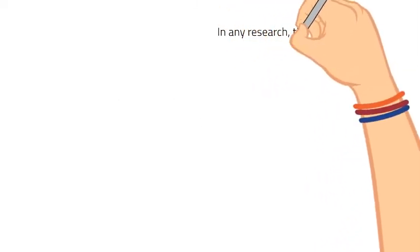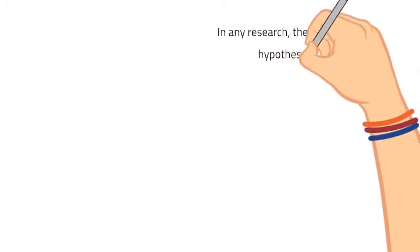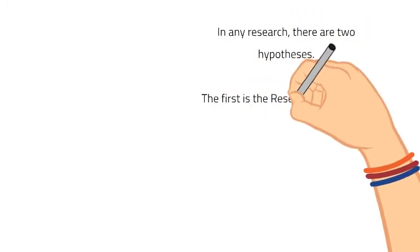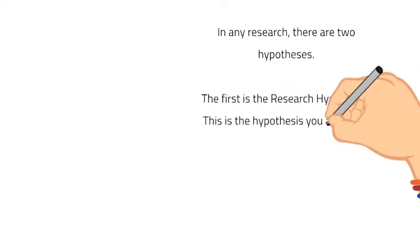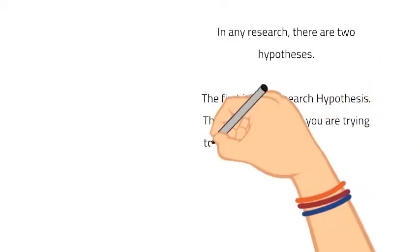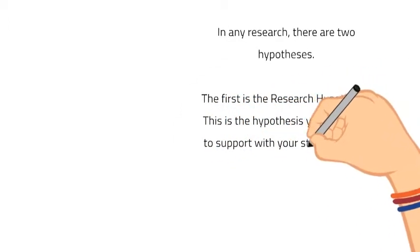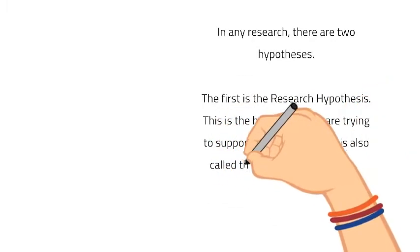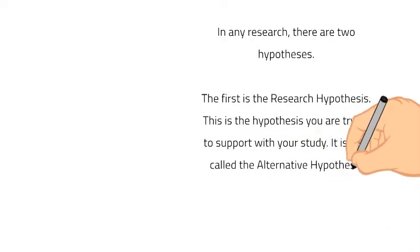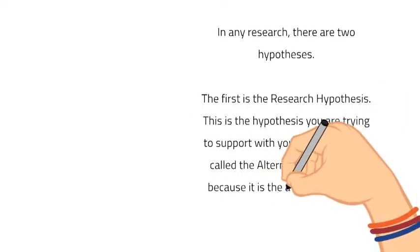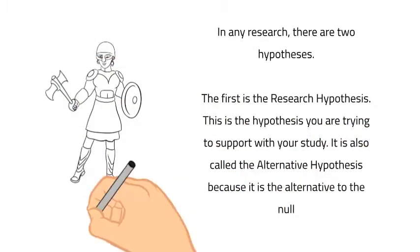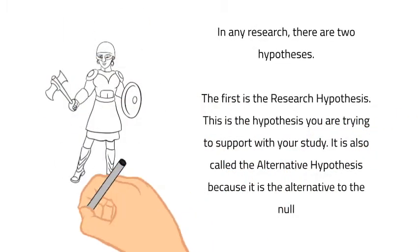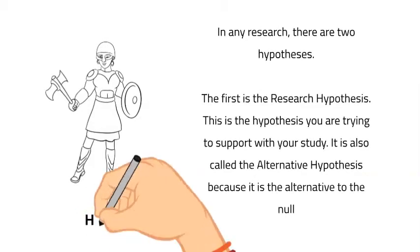In any research study, there are two hypotheses. The first is the research hypothesis — this states there will be some kind of difference or relationship between your variables. We also sometimes call this the alternative hypothesis because it is an alternative to the null. The mathematical symbol for this hypothesis is either H1 or HA, where the A stands for alternative.